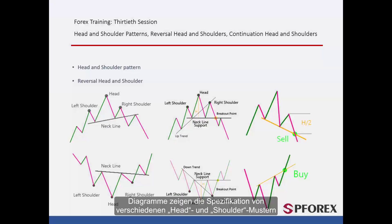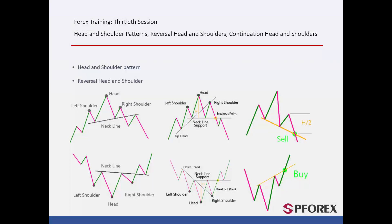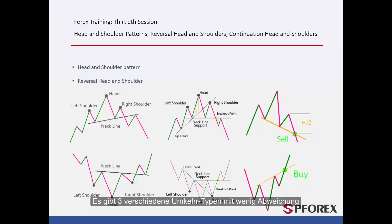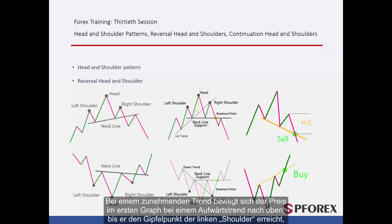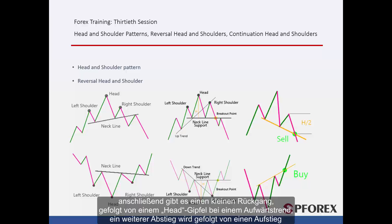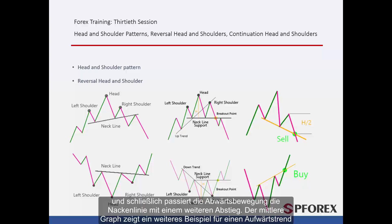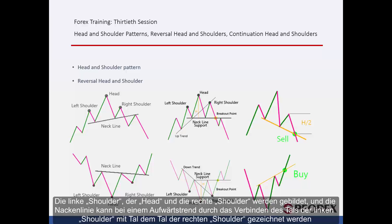The graphs illustrate the specification of different head and shoulder patterns. There are three various reversal types with little discrepancy. In an increasing trend on the first graph, price moves upward in an uptrend until it reaches left shoulder peak, then a small decline followed by an uptrend to head summit, another descent followed by an ascent, and eventually the downward movement passes the neckline and further decline. The middle graph displays another uptrend example where left shoulder, head and right shoulder are formed, and the neckline can be drawn by connecting left shoulder valley to right shoulder valley.